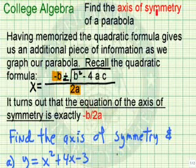In this lesson, we want to find the axis of symmetry of a parabola. This will help us make a more intelligent table of values when we set up the graph. Having memorized the quadratic formula gives us an additional piece of information as we graph our parabola. Recall the quadratic formula: x equals negative b plus or minus the square root of b squared minus 4ac, all over 2a. It turns out the equation of the axis of symmetry is exactly x equals negative b over 2a, which is found in the quadratic formula. Let's look at some examples.